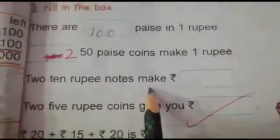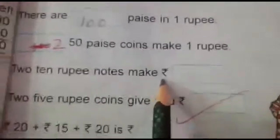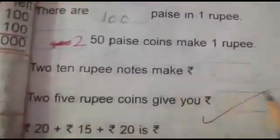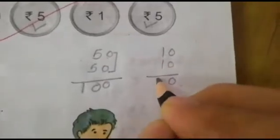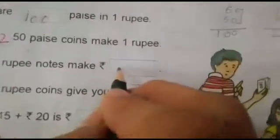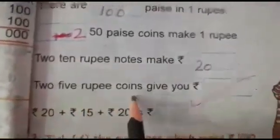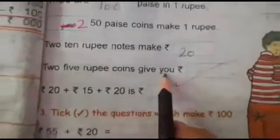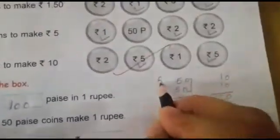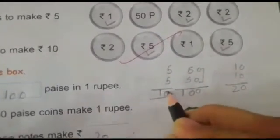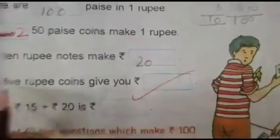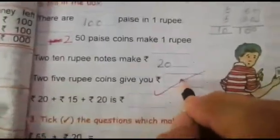2 ten-rupee notes make rupees 20. And 2 five-rupee coins give you rupees 10. 5 rupee coin and 5 rupee coin — 5 and 5 is 10. So 2 five-rupee coins give you rupees 10.